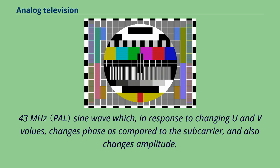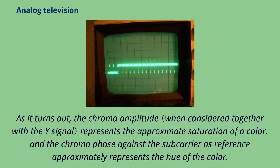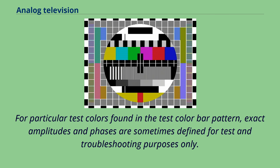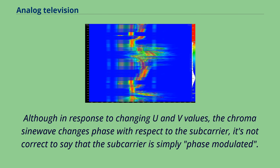For particular test colors found in the test color bar pattern, exact amplitudes and phases are sometimes defined for test and troubleshooting purposes only. Although in response to changing U and V values, the chroma sine wave changes phase with respect to the subcarrier, it's not correct to say that the subcarrier is simply phase modulated.